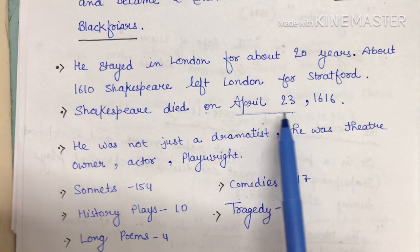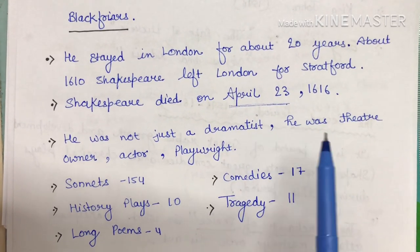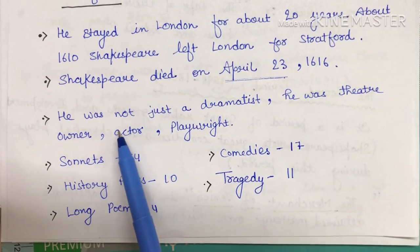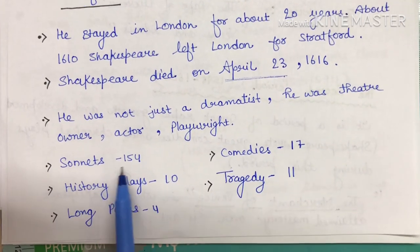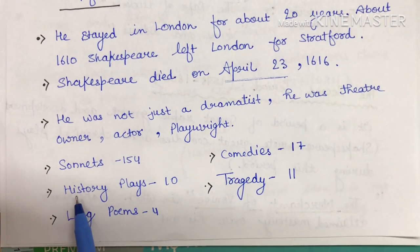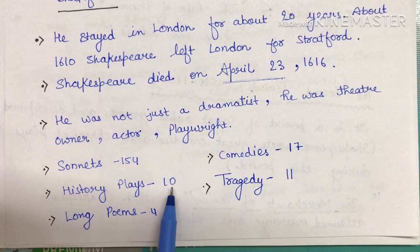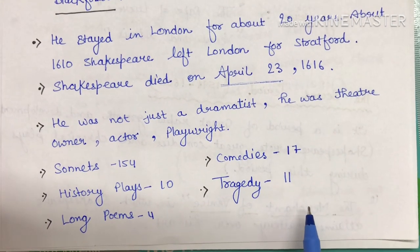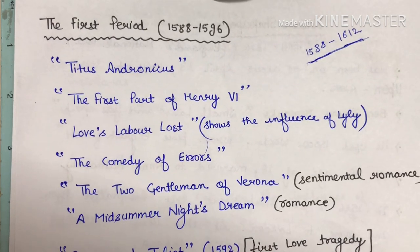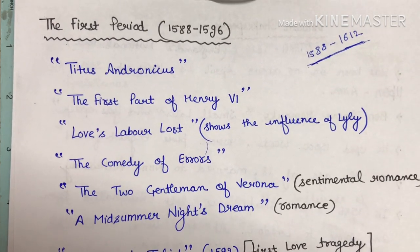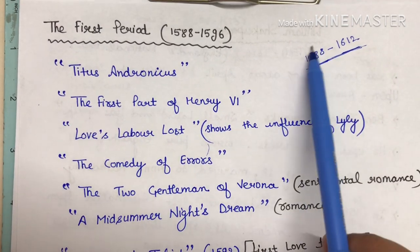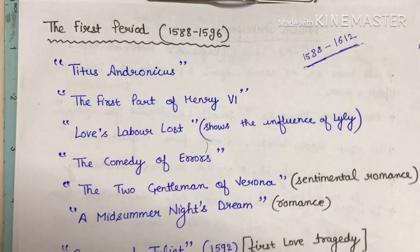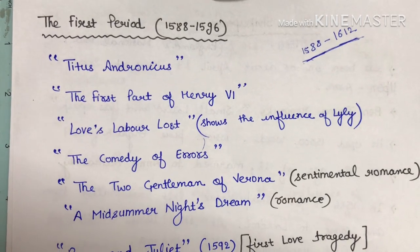Shakespeare died on April 23, 1616. Remember this date, April 23, because he was born on the same date. He was not just a dramatist — he was a theatre owner, actor, and playwright. He wrote around 154 sonnets, 10 historical plays, long poems, 4 comedies, 7 long poems, and 11 tragedies. His literary activity spanned around 24 years, from 1588 to 1612, and is divided into four sub-periods.